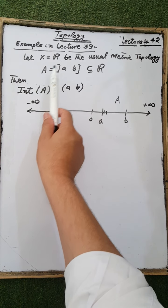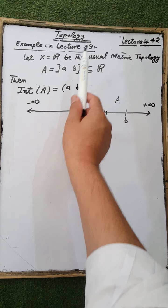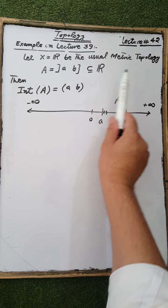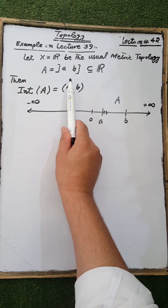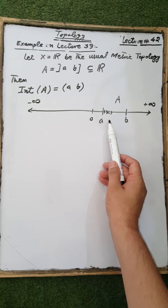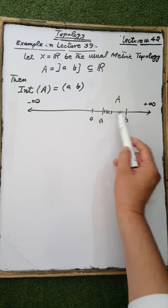This is an example on lecture number 39. Let X equal ℝ be the usual metric topology, and let A be the half-open interval, which is a subset of ℝ. For each point of the set A there is an open interval. In the usual metric topology, the open sets are in the form of an open interval.